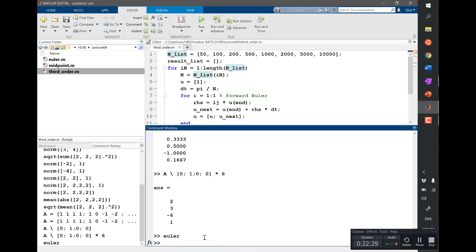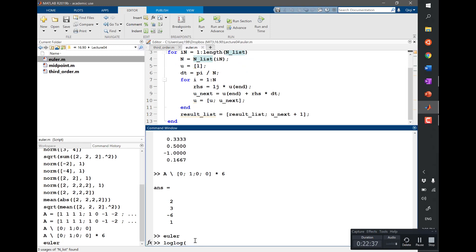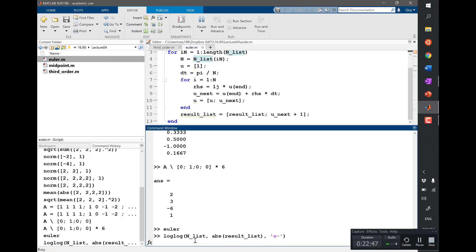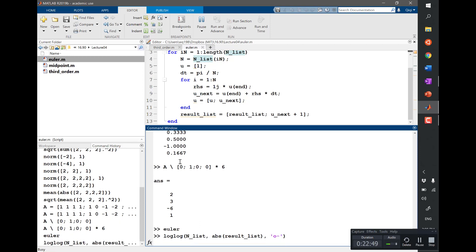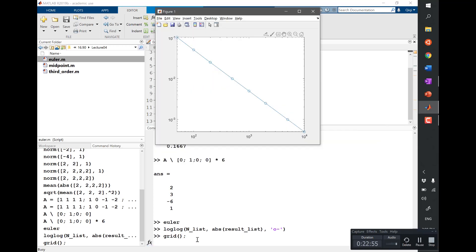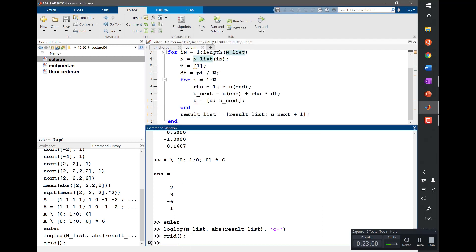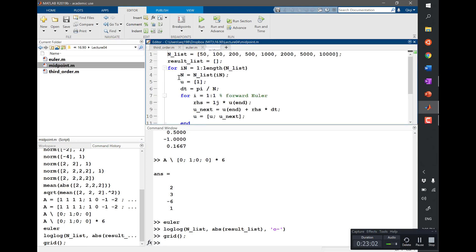And we did a log log plot of N list and the magnitude of result list. So that's for order 4 and we get a slope of 1. And to make it easier, let's actually run the midpoint and plot it actually on the same plot.